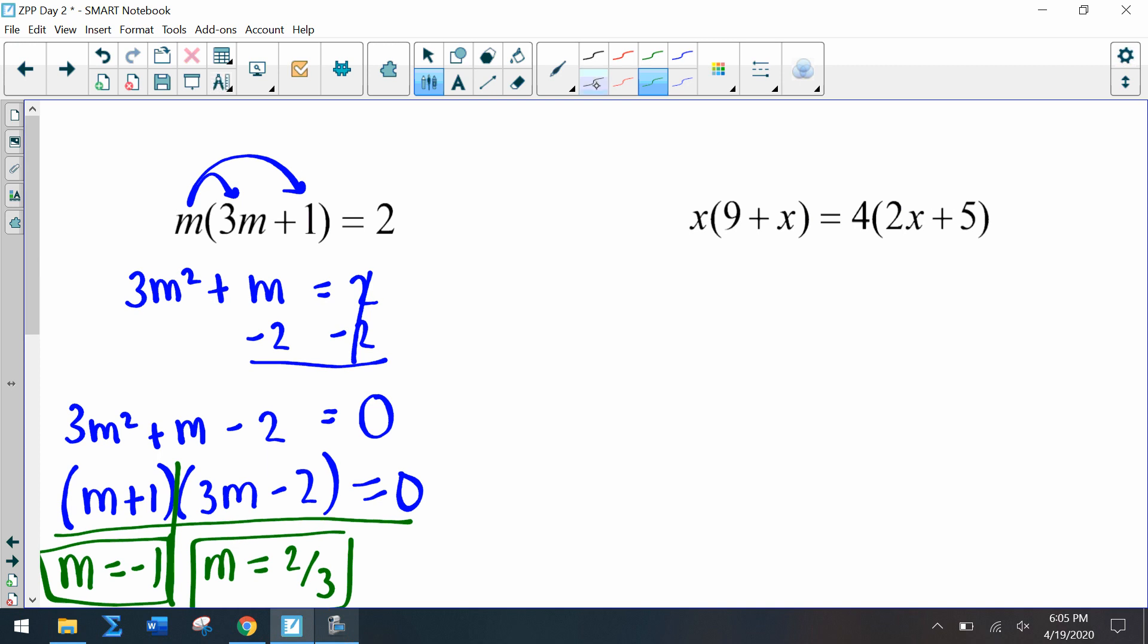Okay, let's look at this next one. So we have to distribute and I have 9x + x² equals 8x + 20. So my x² over here is positive, so I think it's a better idea for me to bring everything all over to that side.